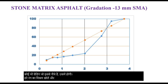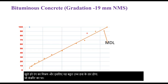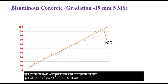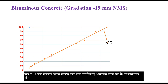For bituminous concrete, the gradation for a 19 mm nominal size of aggregate is as shown. This is the maximum density line — a straight line — and the actual grading or midpoint grading is very close to the maximum density line.